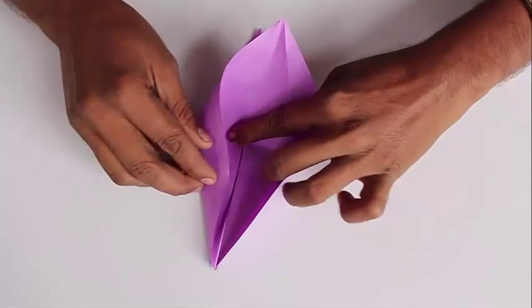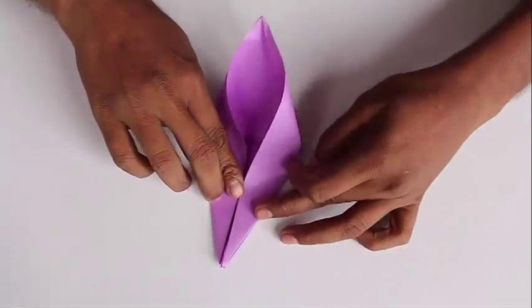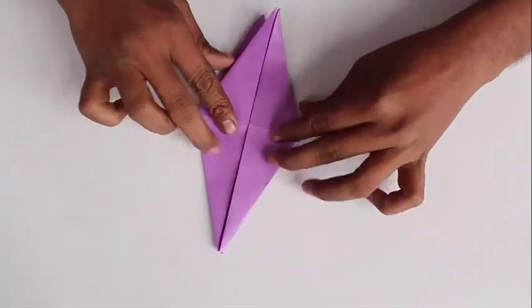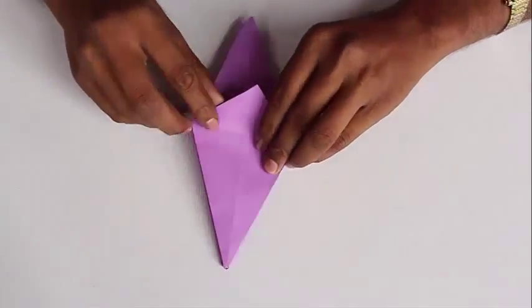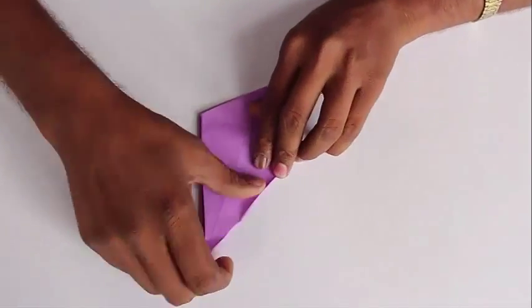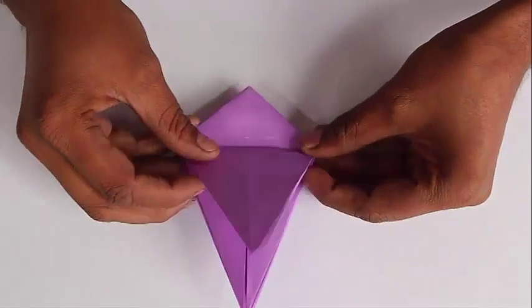Repeat this on the other side of the paper. Lift one layer and then crease them so as to make another diamond. Now this is called the bird base and it is a very versatile base. You can make thousands of birds and animals out of it.